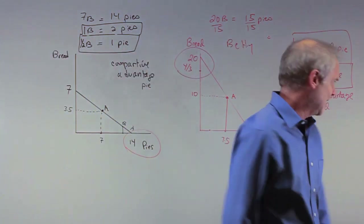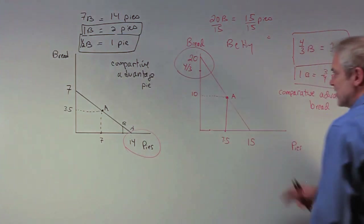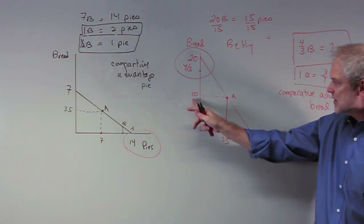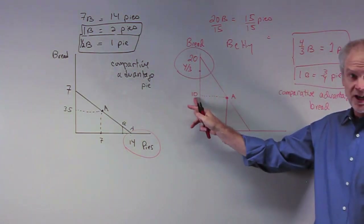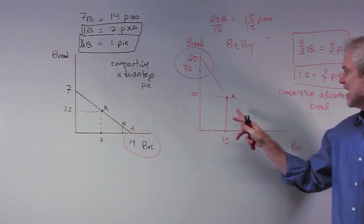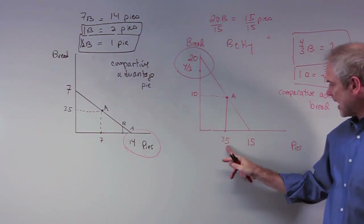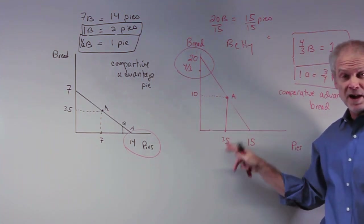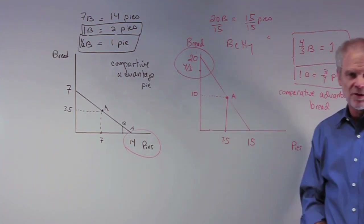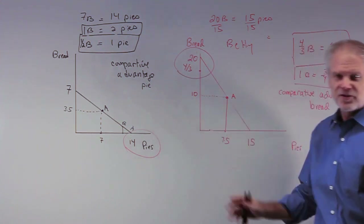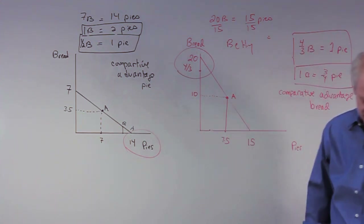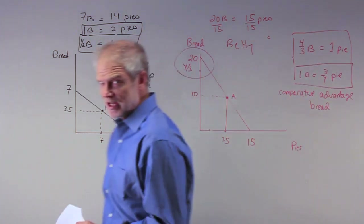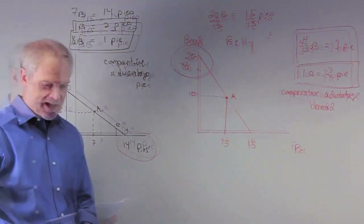Betty is doing the same — she's splitting her time in half as well. Half of her time on bread gives her 10 breads, and half her time on pies gives her 7.5 pies in her hour of labor. So this is what they're both doing. They haven't traded yet; they haven't really seen the advantage of it yet.